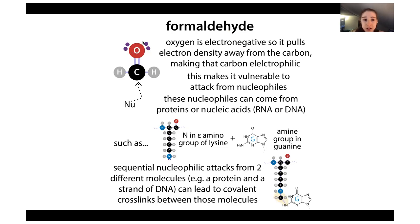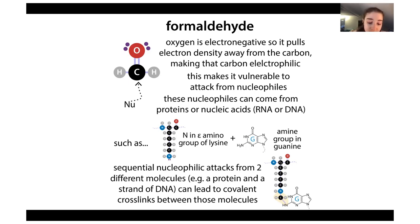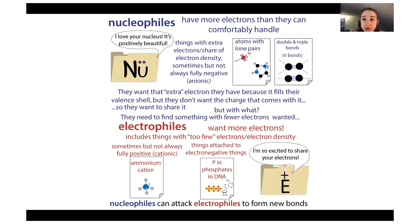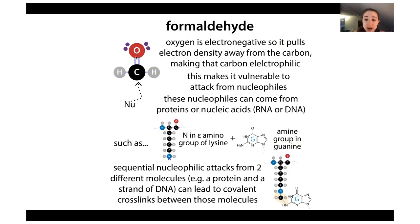One thing about the aldehyde is that the oxygen is highly electronegative, so it's pulling electron density away from the carbon. These atoms are joined by sharing pairs of electrons, and the oxygen is hogging them more, making the carbon partly electron deficient - it's electrophilic. Therefore it's wanting electrons and is vulnerable to attack by things that are nucleophilic. A nucleophile is the opposite of an electrophile - it has more electrons than it can comfortably handle, so it can attack an electrophile through nucleophilic attack.